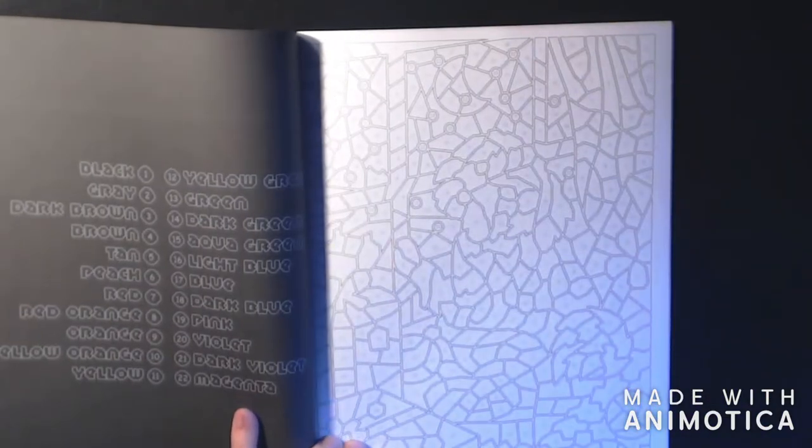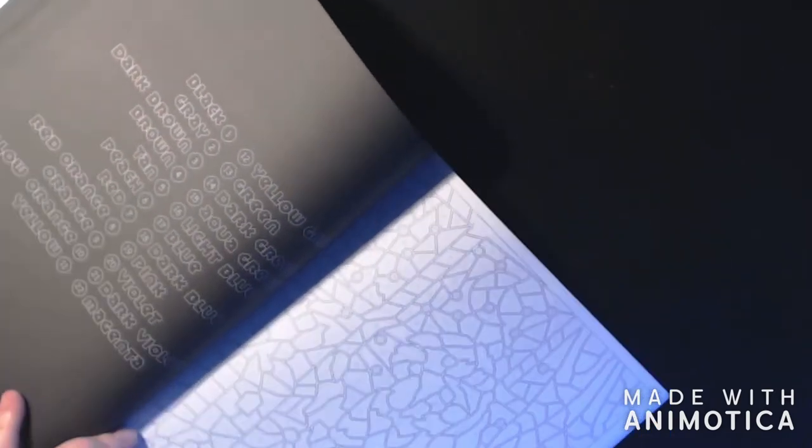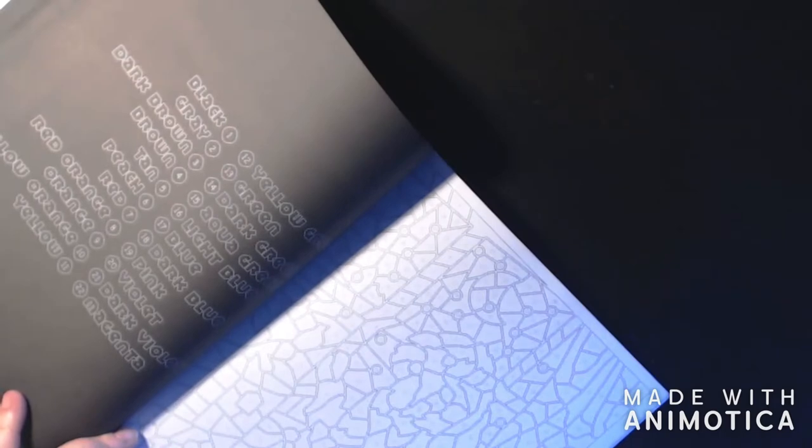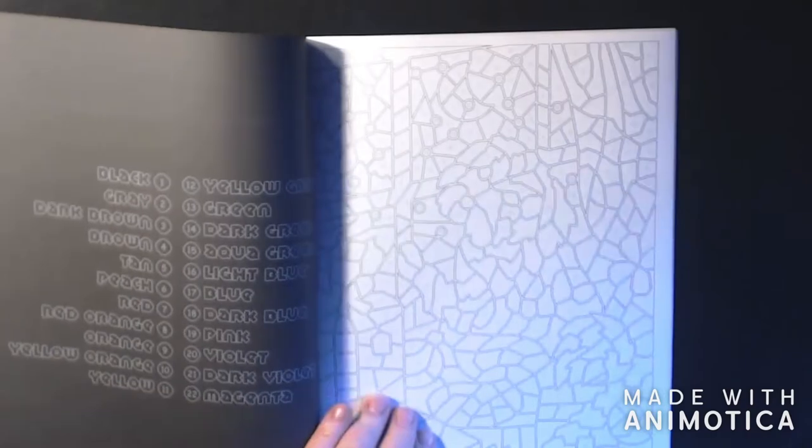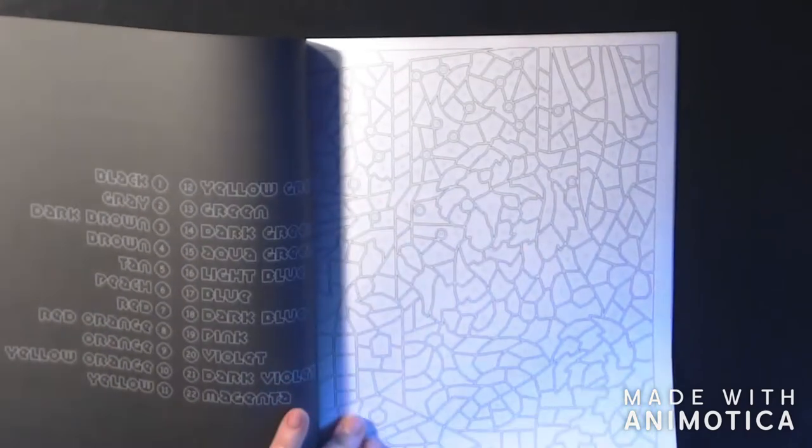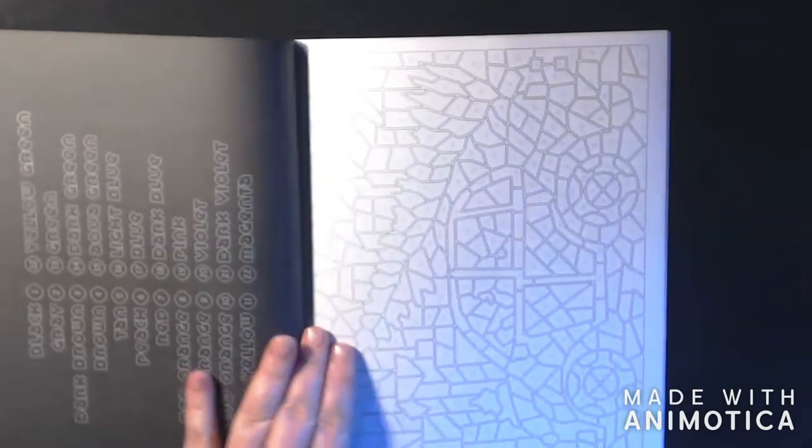This one, I'm not quite sure what this one is. That's the beauty—sometimes you can't tell. Maybe stained glass like a window, I'm not sure. But it'll pop out once you start coloring it. That's what's fun about these sometimes.